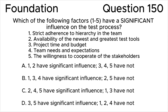The answer choices are: A — one and two have significant influence, three, four and five have not. B — one, three and four have significant influence, two and five have not. C — two, four and five have significant influence, one and three have not. D — three and five have significant influence, one, two and four have not.